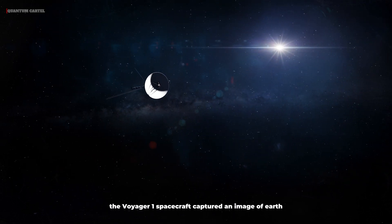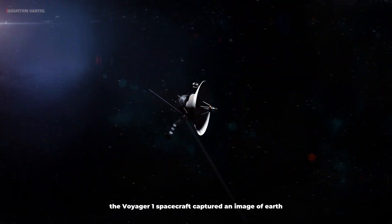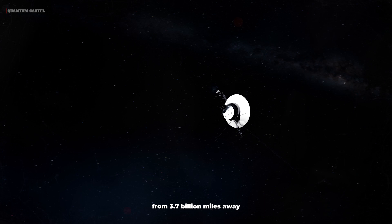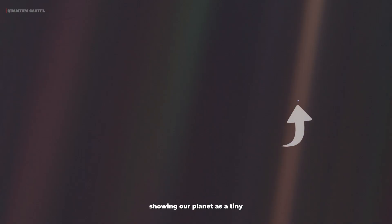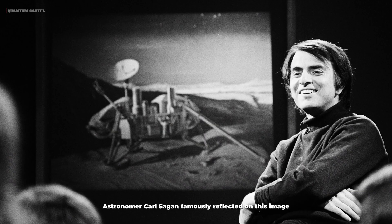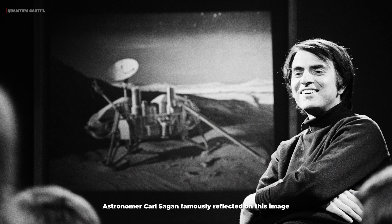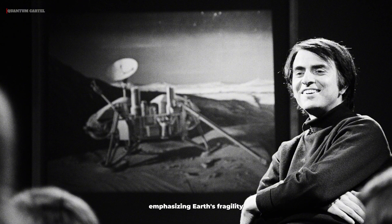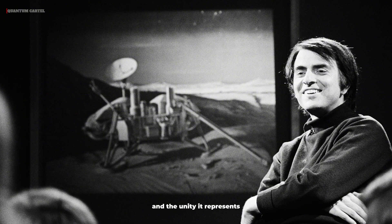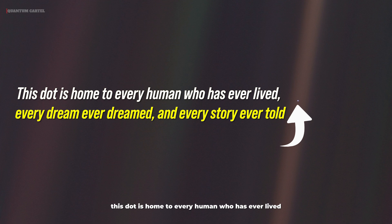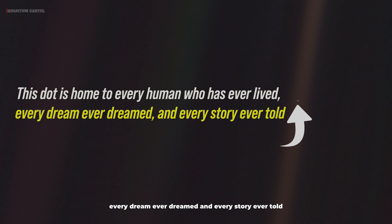In 1990, the Voyager 1 spacecraft captured an image of Earth from 3.7 billion miles away, showing our planet as a tiny, pale blue dot against the vastness of space. Astronomer Carl Sagan famously reflected on this image, emphasizing Earth's fragility and the unity it represents. This dot is home to every human who has ever lived, every dream ever dreamed, and every story ever told.